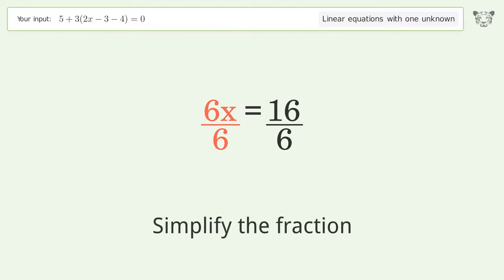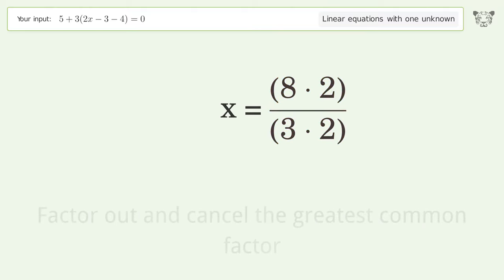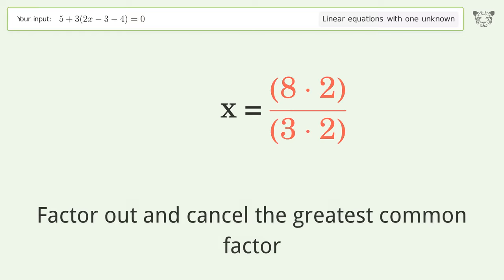Simplify the fraction. Find the greatest common factor of the numerator and denominator. Factor out and cancel the greatest common factor.